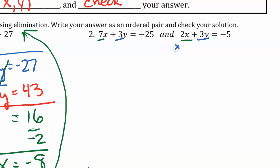This is multiplication. Multiplying by negative 1. So 2x times negative 1 is negative 2x. 3y becomes negative 3y. And negative 5 times negative 1 is positive 5.